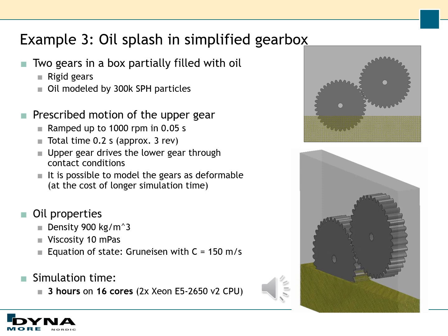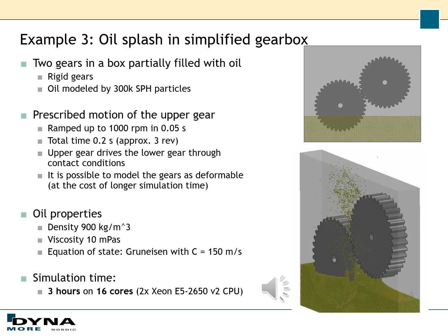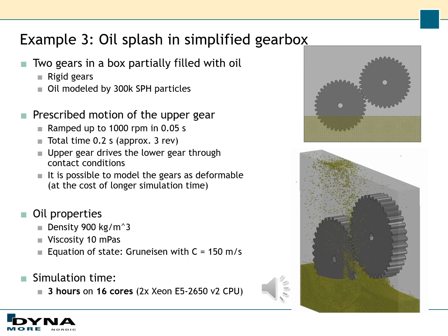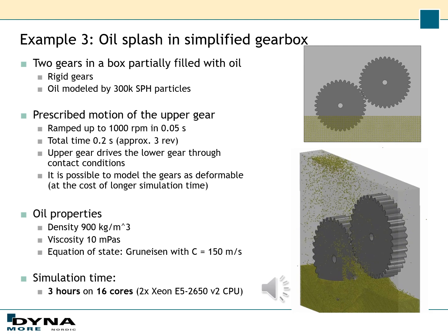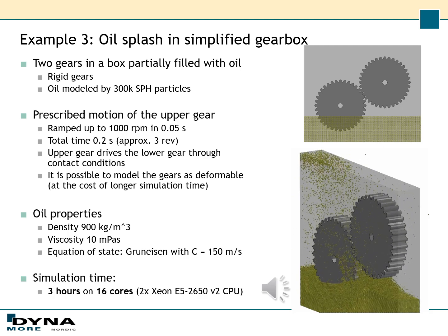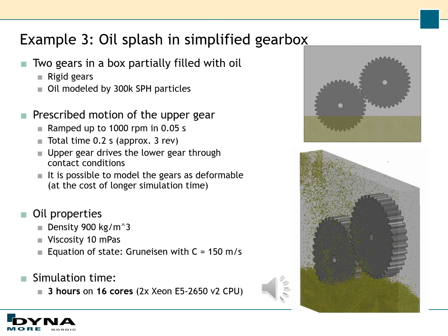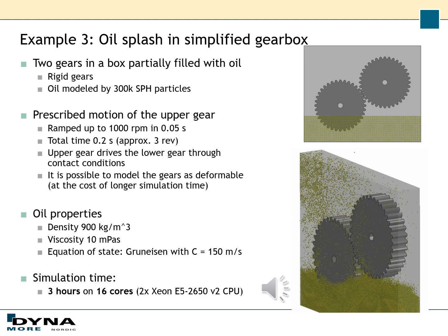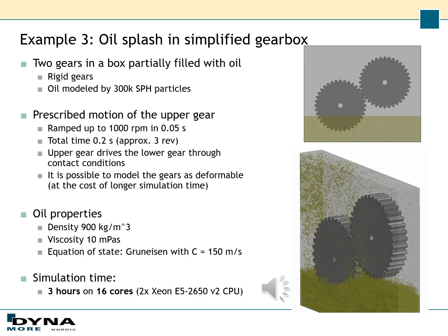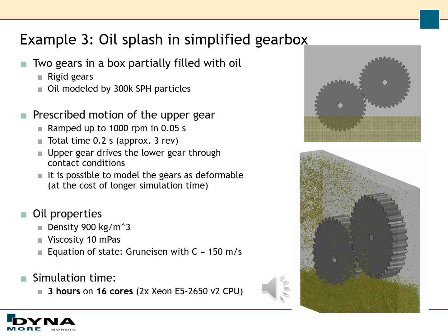Here I have set up an example of a simplified gearbox with two gears in a box partially filled with oil. The gears are modeled as rigid and the oil is modeled by 300,000 SPH particles. A prescribed motion is applied to the upper gear, which then drives the lower gear through contact conditions. It is also possible to model the gears as deformable, but at the cost of longer simulation time. As you can see in the movie, you can study how the oil is distributed and how it splashes due to the motion of the gears.